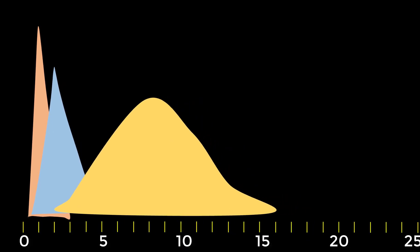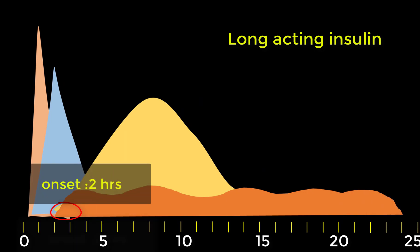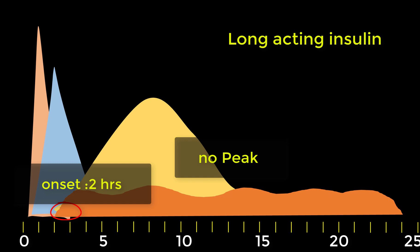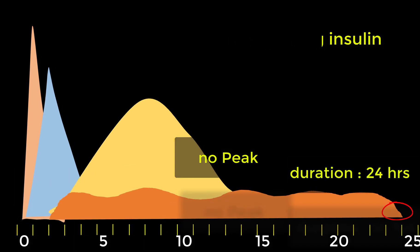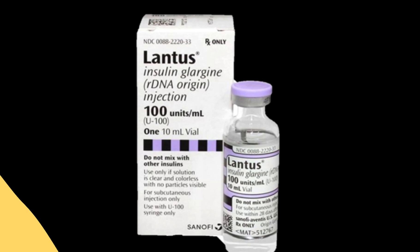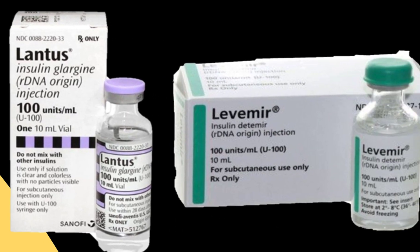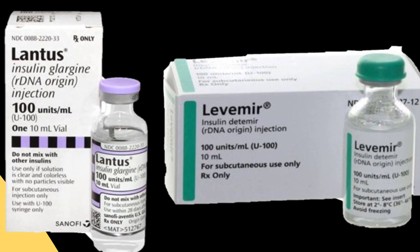Long-acting insulin starts to work about two hours after injection, has no peak, and the duration of action is about 24 hours. Examples of long-acting insulin are insulin glargine, known as Lantus, and insulin detemir, known as Levemir.